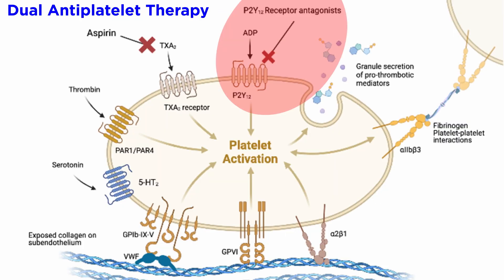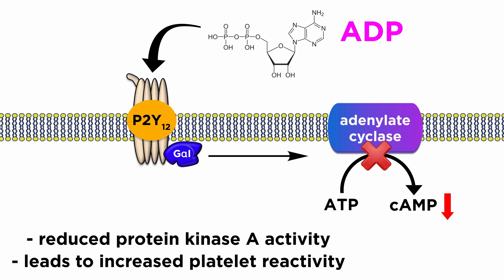P2Y12 receptor antagonists block the function of ADP at this receptor, which as we discussed, are prothrombotic through their reduction of intracellular cAMP concentrations.